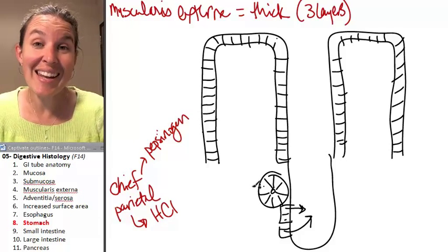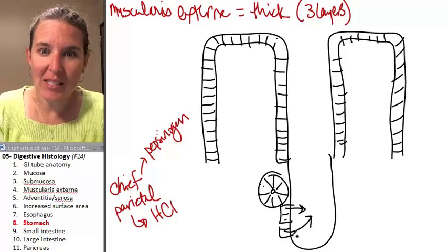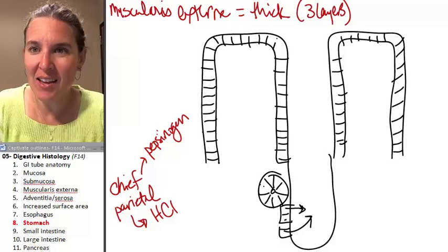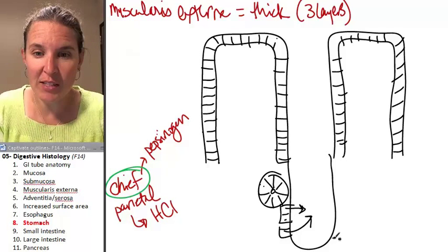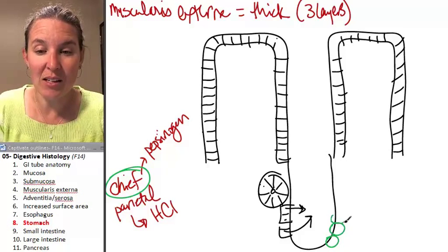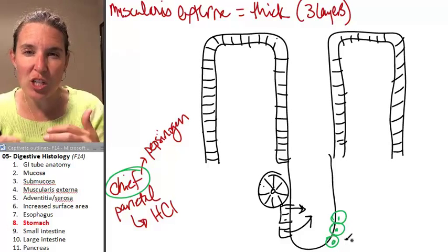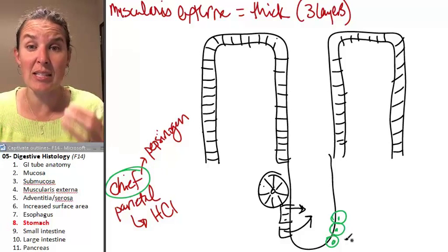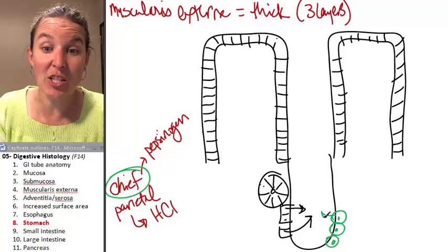Which is an inactive protein enzyme. So, what happens is the chief cells are located deep. I'm going to draw chief cells down here. I'm not actually going to be able to tell the difference in our slides between them. But we know that the chief cells are deep in these gastric pits, and they produce the pepsinogen.